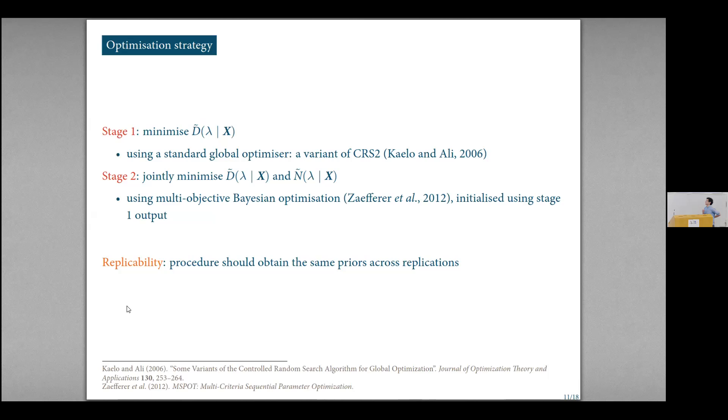I'm not going to say very much about the optimization strategy. It's not super clever. It's kind of throws lots of computation at the problem to make it work. In the first step, we only consider the first objective using a standard global optimizer. And then the second step, we jointly try to minimize the two objectives using multi-objective Bayesian optimization. And that procedure then leads to the third kind of property that we might like this method to have, which would be that it would be replicable. And so you get the same prior if you run this optimization procedure lots and lots of times.